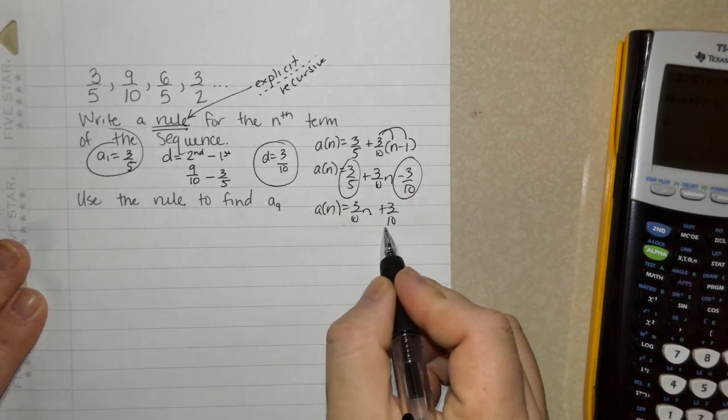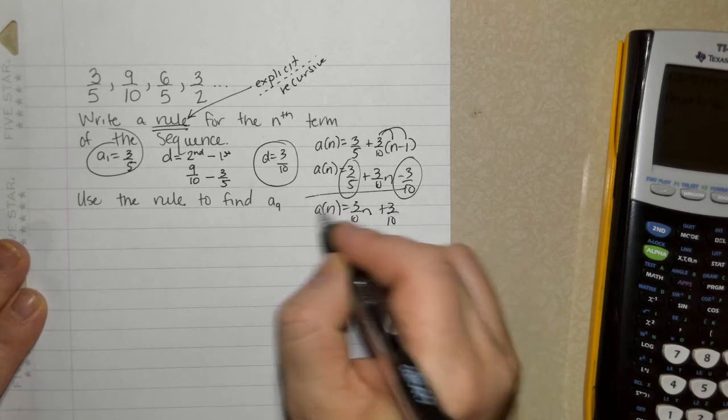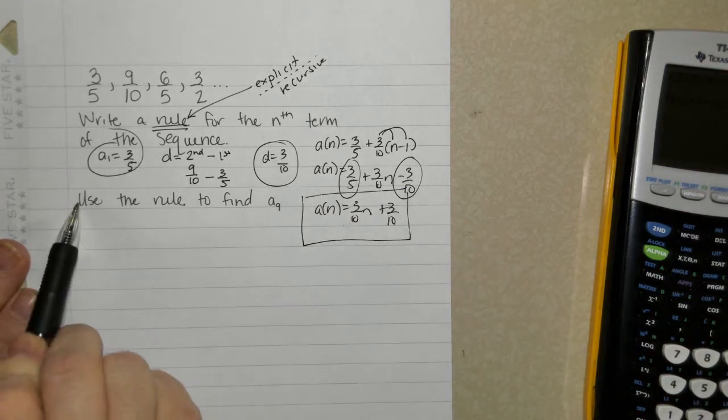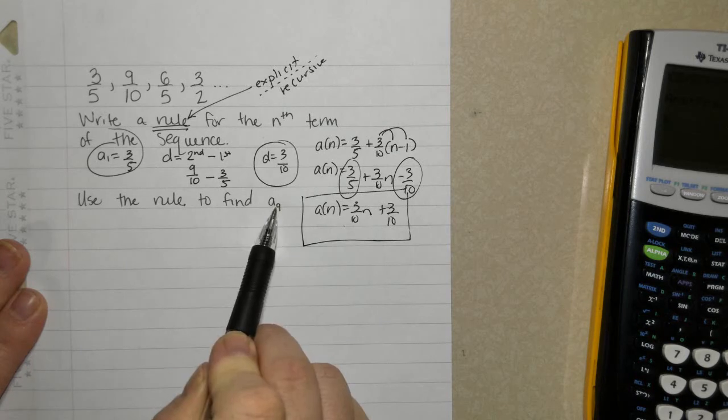Is it always going to be the same number? No. Just happens to be a coincidence. Okay. The next part. Use this rule you created to find the ninth number.